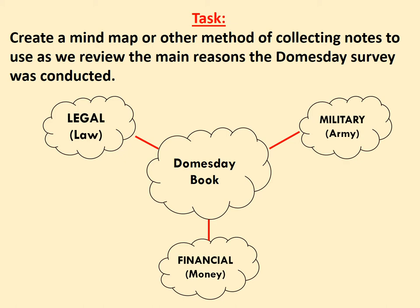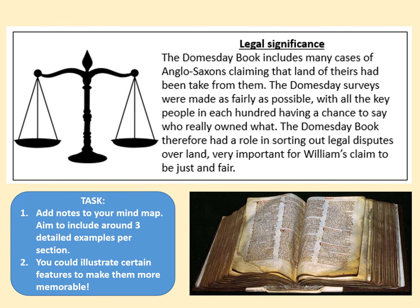Our first category is the legal significance. Add notes to your mind map with a minimum of three detailed examples per section. The Domesday Book includes many cases of Anglo-Saxons claiming land had been taken from them. The surveys were made as fairly as possible, with all key people in each hundred having a chance to say who really owned what. The Domesday Book therefore had a role in sorting out legal disputes over land — very important for William's claim to be just and fair. It was done by mutual agreement, so if someone claimed more land than they owned, the community would ensure the truth came out.